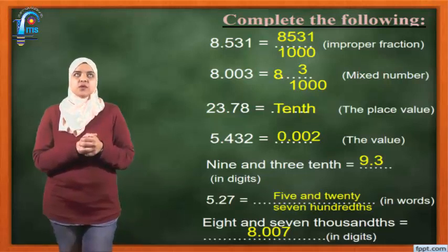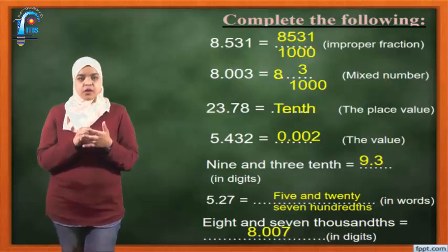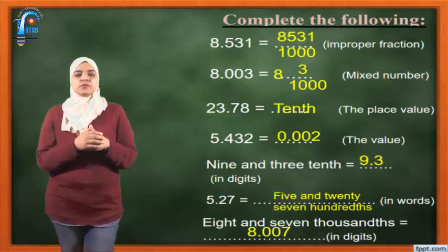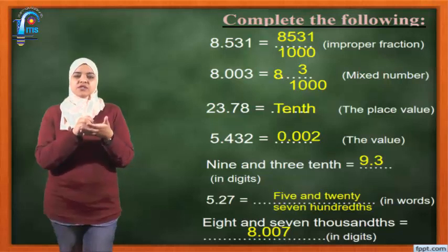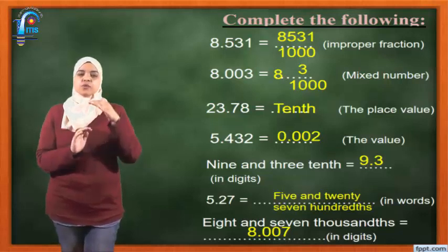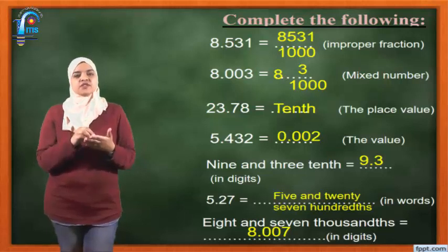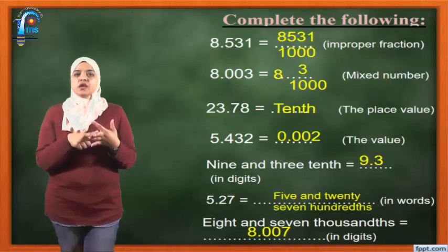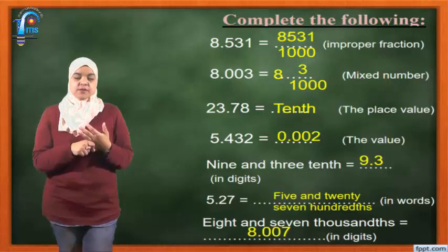8.003 equals what? I want the mixed number. As we said, in a decimal number, the part before the decimal point is called the whole number. So here 8 is the whole number. I take 8 and put it in the whole number. I put 3 in the numerator. How many digits after the decimal point? Three places. So I put 1000 in the denominator.